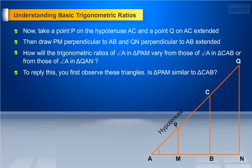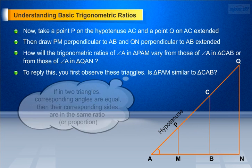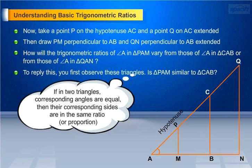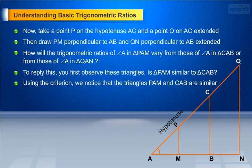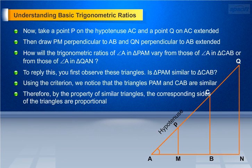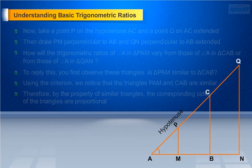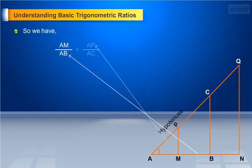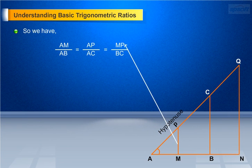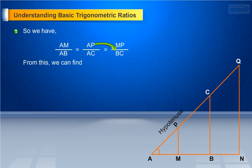To answer this, observe these triangles. Is triangle PAM similar to triangle CAB? Recall the AA criterion, which states that if in two triangles corresponding angles are equal, then their corresponding sides are in the same ratio or proportion. Using this criterion, triangles PAM and CAB are similar. Therefore, by the property of similar triangles, AM/AB = AP/AC = MP/BC. On rearranging, MP/AP = BC/AC = sin A.